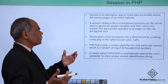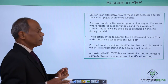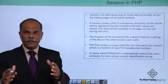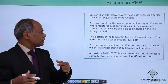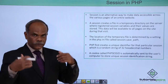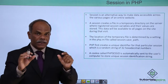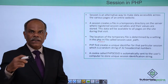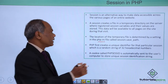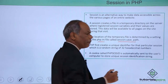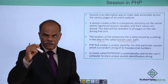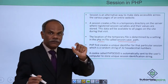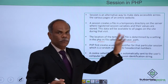This data will be available to all pages during the session time interval. The session data is stored in a temporary directory on the web server, and the location of that directory is decided by the setting in php.ini. You can specify which directory the session data is to be stored in — that setting is called session.save_path.